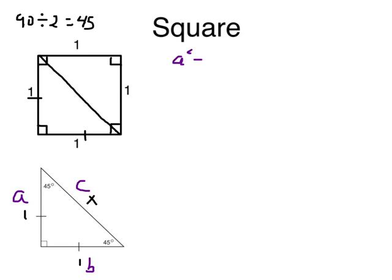A squared plus B squared equals C squared. Well, A is 1, B is also 1, and C is X. Now, 1 squared is 1 times 1, which is 1.